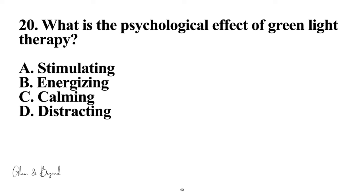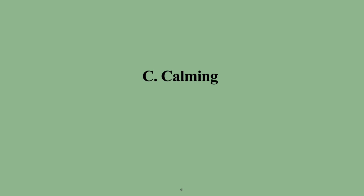Number twenty: what is the psychological effect of green light therapy? A, stimulating; B, energizing; C, calming; D, distracting. The answer is C, calming.